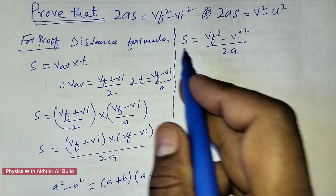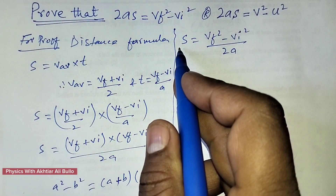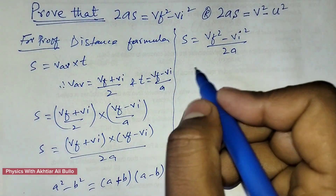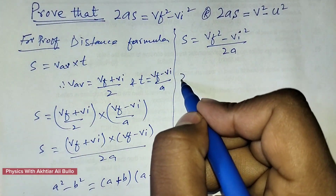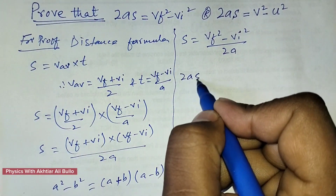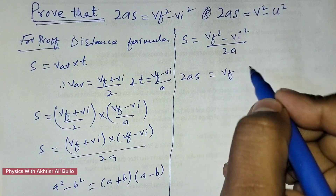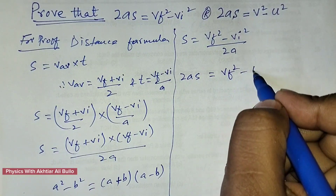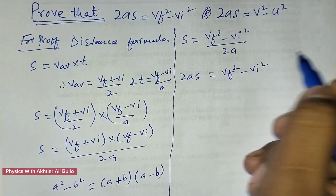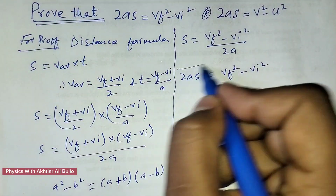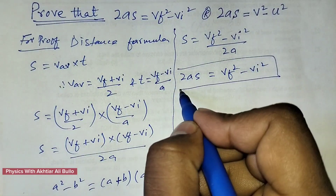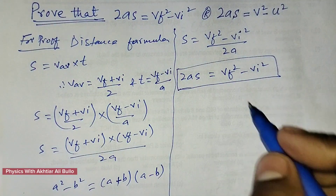So we can rearrange this equation as 2As is equal to Vf squared minus Vi squared. This is our required formula.